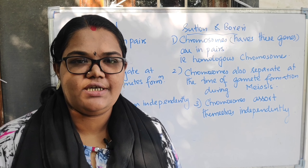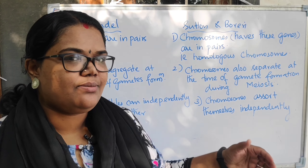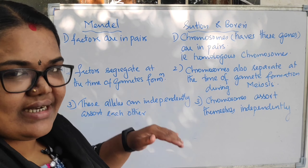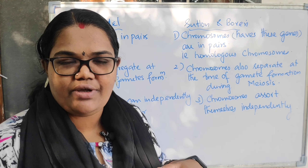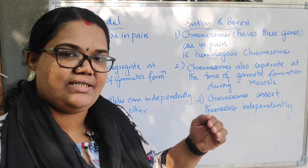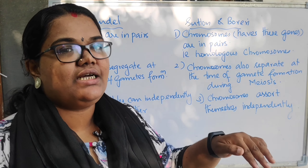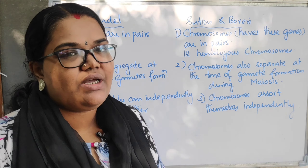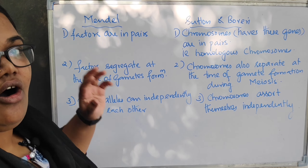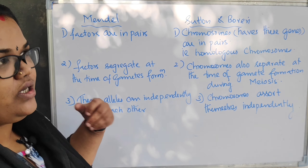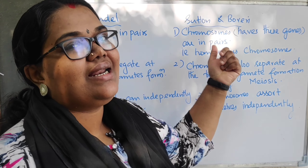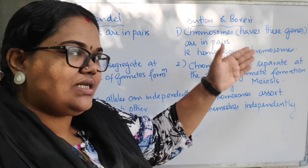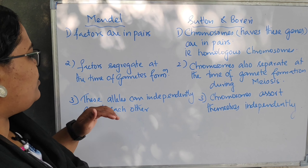Now we will do a comparative analysis of Mendel's work and Sutton and Boveri's work. Mendel said factors are the vehicles of inheritance — later understood to be genes. Sutton and Boveri said chromosomes are the vehicles of inheritance, which makes sense because genes are present on chromosomes. According to Mendel, genes or factors are in pairs — the alleles. According to Sutton and Boveri, chromosomes carrying those genes are in pairs — the homologous chromosomes, one maternal and one paternal.